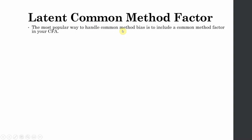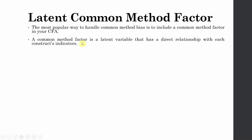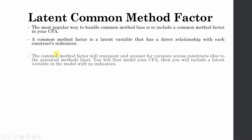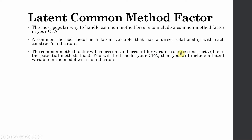The most popular way to handle common method bias is to include a common method factor in your CFA. A common method factor is a latent variable that has a direct relationship with construct indicators. You include a common factor that is directly related to every single indicator in your model. You first model your CFA, then include a latent variable in the model with no indicators — using the same original model but adding another latent variable with no indicators.